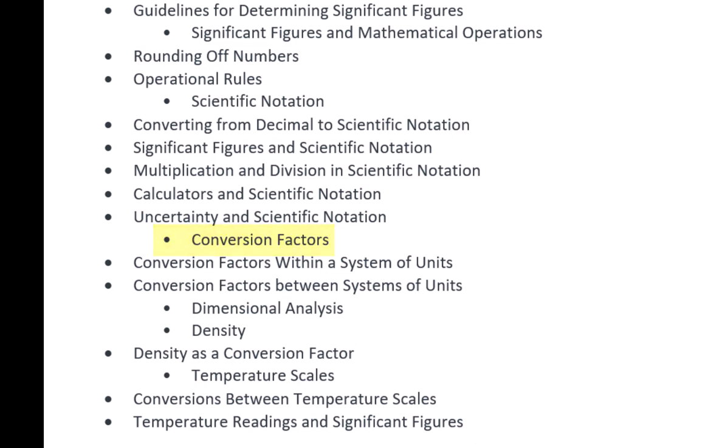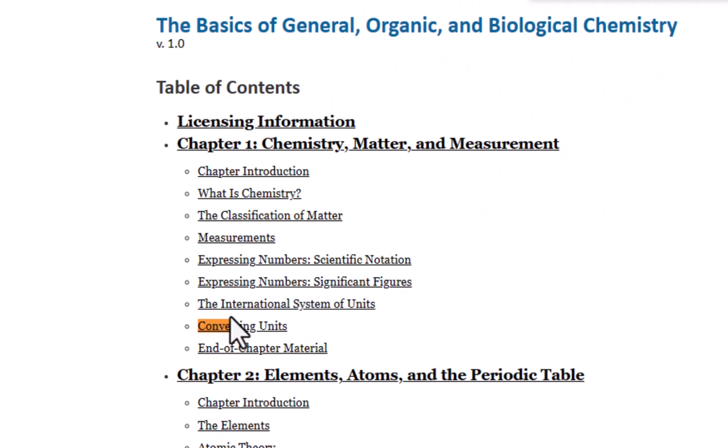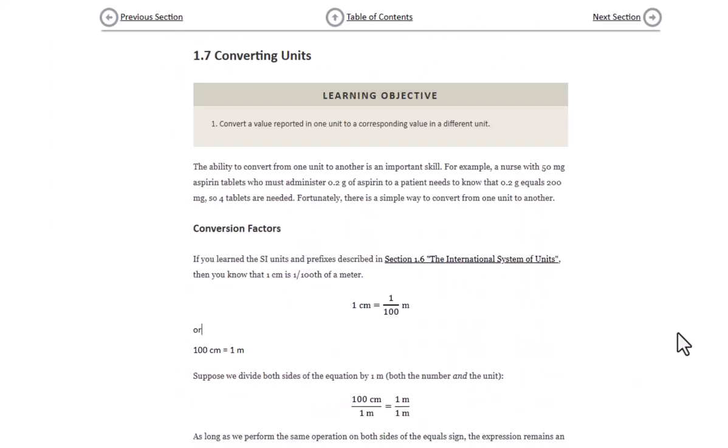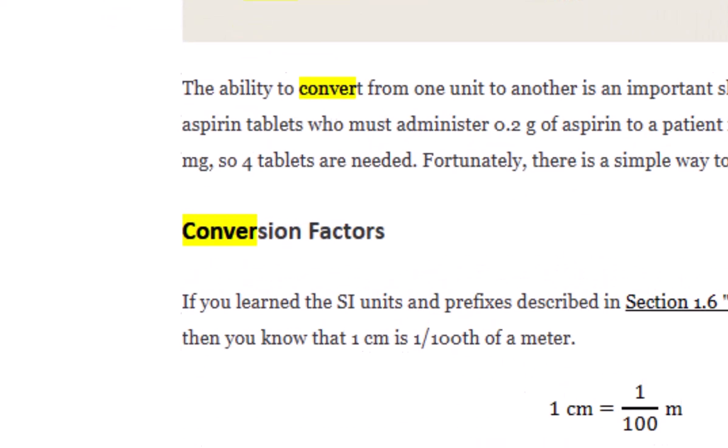When I go to Ctrl F and search this time, I'm not going to use the whole word conversion. I'm using the root of the word, and then when I click on that chapter, I notice that conversion factor the way that my instructor has noted it is listed right in that chapter, so I know I'm in the right place.